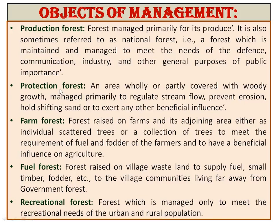Next is protection forest. These forests are managed for protection purposes — an area wholly or partially covered with woody growth, managed primarily to regulate streamflow, prevent erosion, hold shifting sand, or to exert any other beneficial influence. The third one is farm forest — forest raised on farmland and its adjoining area, either as individual scattered trees or a collection of trees, to meet the requirement of fuel and fodder of the farmer and to have a beneficial influence on agriculture.